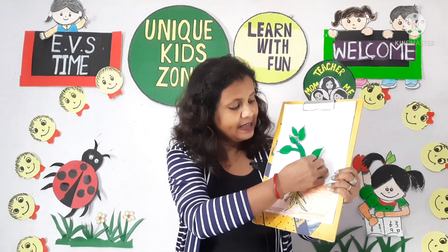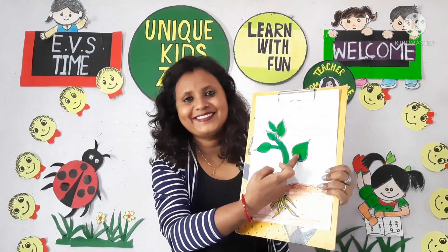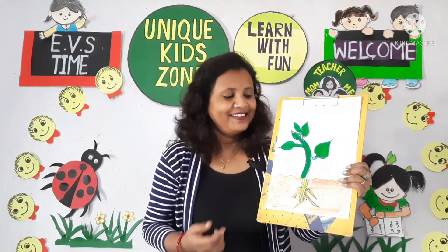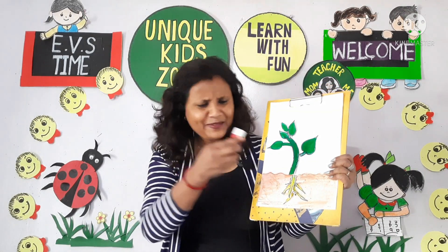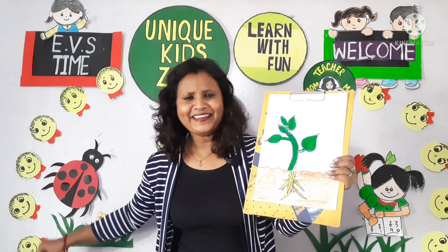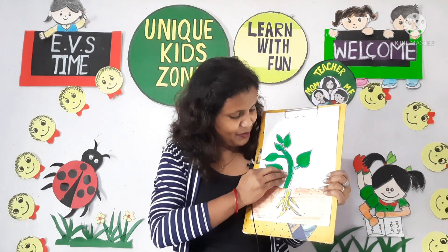The leaf is another most important part of a plant — the energy house, the food factory. Without this leaf, plants can't make food because chlorophyll is there. Slowly you will come to know more about that. Let me stick another leaf too because plants have many, many leaves.